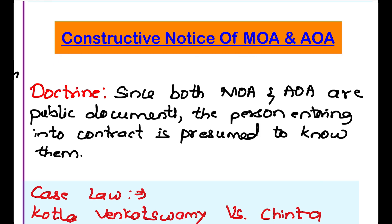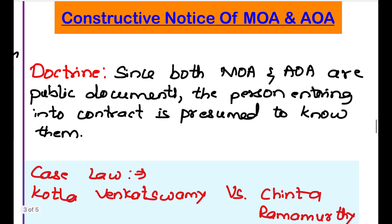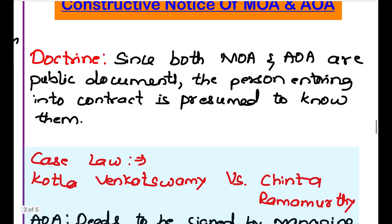The next important concept in Unit 2 is Constructive Notice of Memorandum of Association and Article of Association. Since both MOA and AOA are public documents registered with the registrar, they are made public. Any outsider entering into a contract with the company — for example, buying shares or entering into any kind of contract — is presumed to have read the MOA and AOA of that company. This is called Constructive Notice.